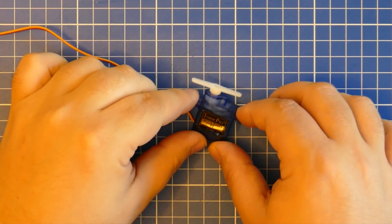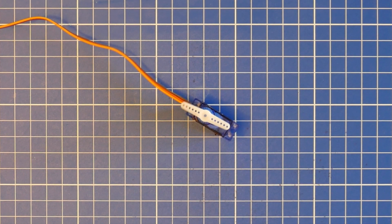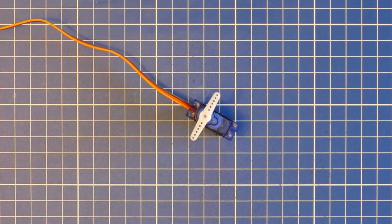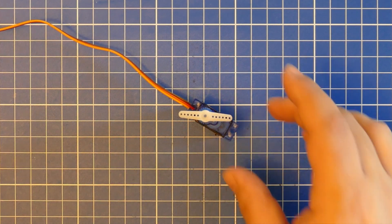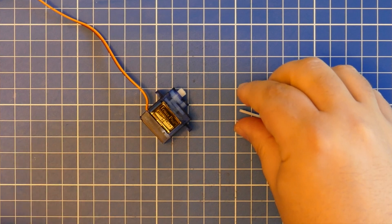A servo is a little self-contained package which allows us to precisely control the angle of its output shaft. The output shaft plugs into a little piece of plastic called a servo horn which we can then attach to whatever we want. These always come packaged with the servos when you buy them.